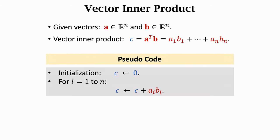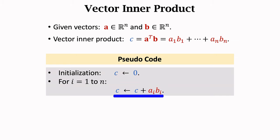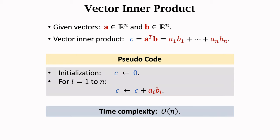Here is the pseudocode. Initialize C to 0 — it is a scalar, not a vector. Then perform the for loop, increasing i from 1 to n. i is the index of that element. Compute A sub i times B sub i and add the product to C. The overall time complexity is O(n), where n is the size of the input vectors A and B. The program performs scalar multiplications n times, and a scalar multiplication has constant time complexity. That is why the overall time complexity is O(n).